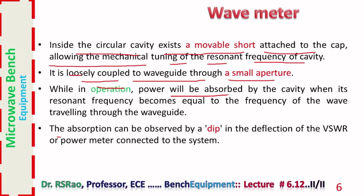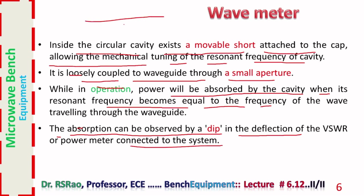Inside the circular cavity exists a movable short attached to the cap, allowing the mechanical tuning of the resonant frequency of the cavity. It is loosely coupled to the waveguide through a small aperture. Power will be absorbed by the cavity when its resonant frequency equals the frequency of the wave traveling through the guide. This absorption can be observed by a dip — a decrease in deflection — in a power meter or VSWR meter connected to the system. The frequency of the wave can be found from the scale over the surface of the wave meter.